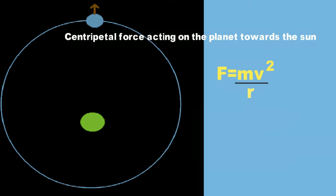Where we know F is the force, m is the mass of the planet, v is its speed, and r is its distance from the sun.